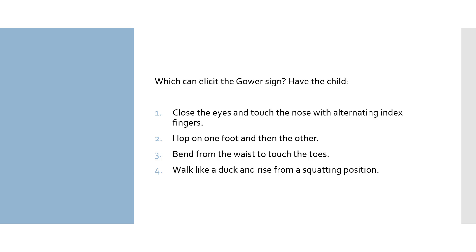Number one: close the eyes and touch the nose with alternating index fingers — this sign measures balance and is called the Romberg sign, used for vertigo and intoxication. Number two: hop on one foot and then the other — this test measures balance and coordination; the Gower sign tests muscle weakness. Number three: bend from the waist to touch the toes — this test measures flexibility; the Gower sign tests muscle weakness. Number four: walk like a duck and rise from a squatting position — this is one way to test the Gower sign. Children with muscular dystrophy will have difficulty rising and standing from a squatting position due to the lack of muscle strength. Number four is our answer.